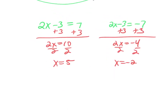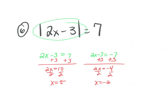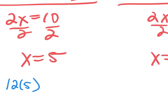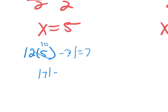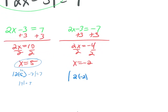Before I pat myself on the back, what do I need to do? Check. Go back to the original. Absolute value of 2 times 5 minus 3: 10 minus 3 is absolute value of 7, which equals 7. x equals 5 is a solution. Now absolute value of 2 times negative 2 minus 3: negative 4 minus 3 is negative 7. Is the absolute value of negative 7 the same as positive 7? Yes, so this is a solution as well.